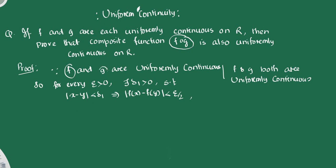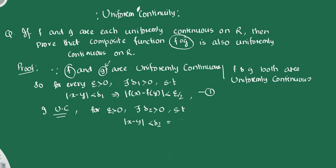By using the definition of uniform continuity for function z: for every epsilon greater than 0, there corresponds a delta 2 greater than 0 such that whenever |x − y| < delta 2, it implies |z(x) − z(y)| < epsilon/2. This is inequality number 2.